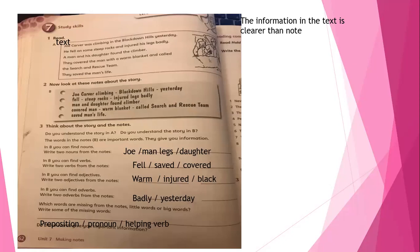Here we have a note about the story. Here we have a story, text of the story, and here we have a note. Let's read the note: Joe Carver climbing, Black Downhounds yesterday. Here we have fell, stepped rock, injured legs badly. Man and daughter found the climber. They covered man, warm blanket, called search and rescue team, saved man's life.